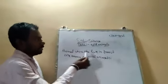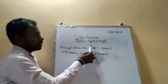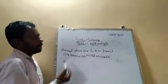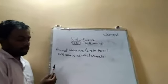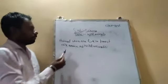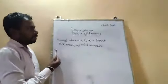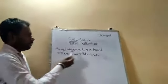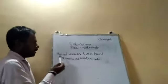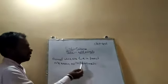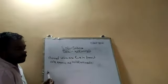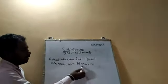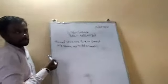We are discussing, in this session, the wild animals. It is the fourth chapter in your textbook. See what I mean by wild animals — animals which are deviant, polished, they are known as the wild animals.